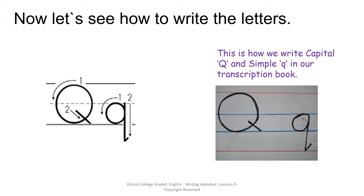Now we are going to write the simple Q. Keep a dot on your board. Take a nice small curve onto your left hand side, go up and come down in the same straight line, then go up with a short slanting line and stop. This is the simple Q. Is your simple Q the same as the one on the screen? Then it's good. Now you are going to write the same letters in your transcription book. Shall we do that?